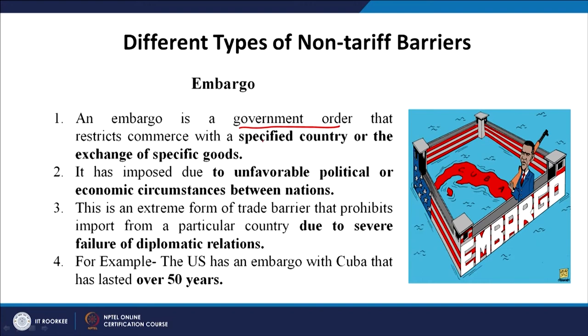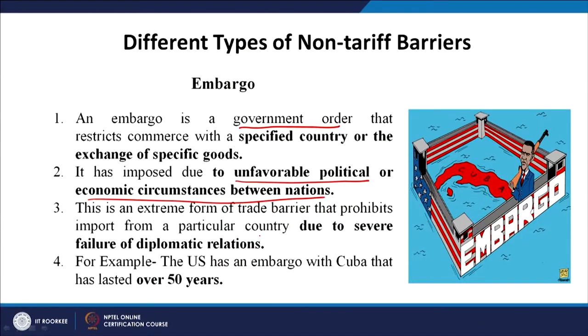Another type of non-tariff barrier is embargo. It is a government order that restricts commerce with a specified country or the exchange of specific goods, imposed due to unfavorable political or economic circumstances between nations. For example, India and Pakistan — it is no secret that we do not have a very favorable political climate. This is an extreme form of trade barrier that prohibits imports from a particular country due to severe failure of diplomatic relations. The US also had an embargo with Cuba lasting over 50 years when Fidel Castro was in power.